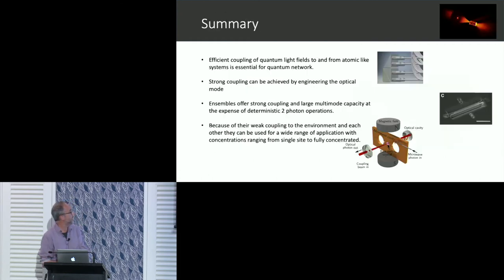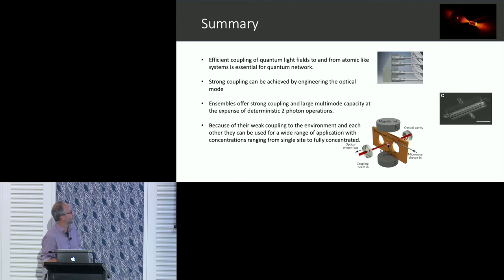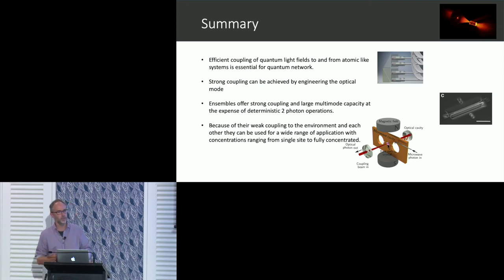In summary: the ability to exchange quantum information between optical and material systems is going to be essential for quantum networks. You can either engineer the optical mode or engineer the radiation mode by using ensembles. The reason we really like rare earth ions is their weak coupling to the environment, which allows us to work over the full range of concentrations and develop a whole range of devices that are compatible with each other.